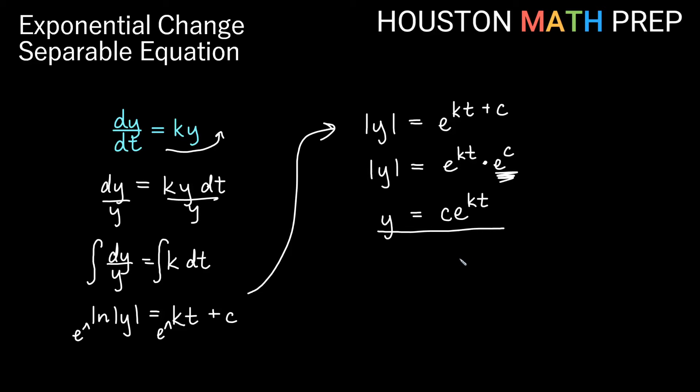You might see this in different forms depending on the context. In a chemistry course or something like that, you might see something like A equals A sub zero times e to the kt. But k is our rate. It's our rate of growth. And we have an ending amount and a starting amount here, A sub zero. In other words, the amount at time zero, perhaps.